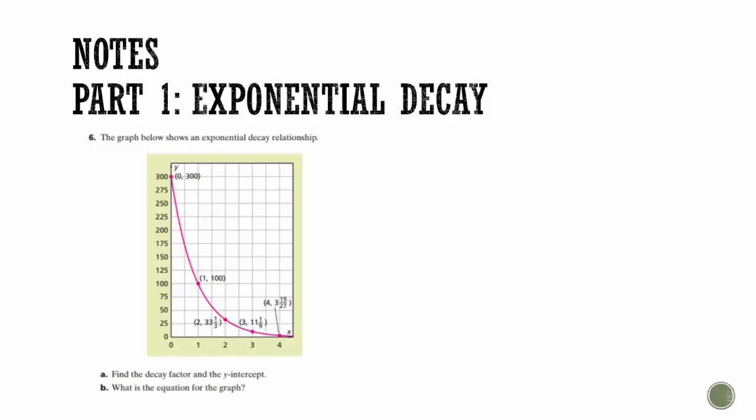So the graph below shows an exponential decay relationship. We need to find the decay factor and the y-intercept and then make an equation for it. So remember, our equation is going to look like this, where this right here is our y-intercept, and this is our decay factor. So the y-intercept is easy to find. It's just where it crosses the y-axis. And in this graph, it's 300. So far, I know y equals 300 times something to the x-power.